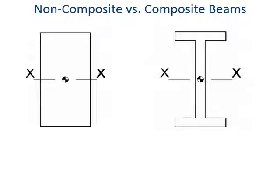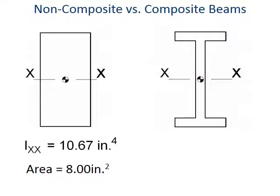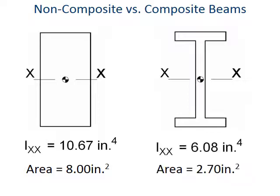So here we have two kinds of beams, a non-composite beam or a solid shape, and a composite beam, which is made up of three shapes, and in this case, three rectangles, which make up the I beam. And so when we compare the moments of inertia, I, and the areas, we see that for the rectangle, we have 10.67 with an area of eight square inches. And then for the composite beam, we have I is 6.08 and an area of 2.7.